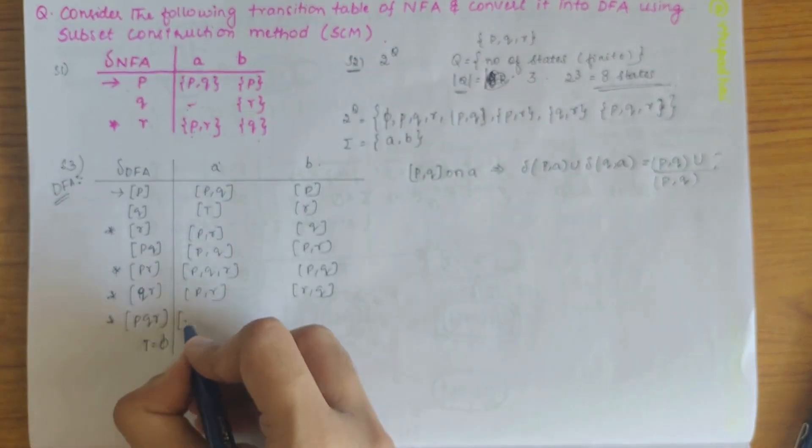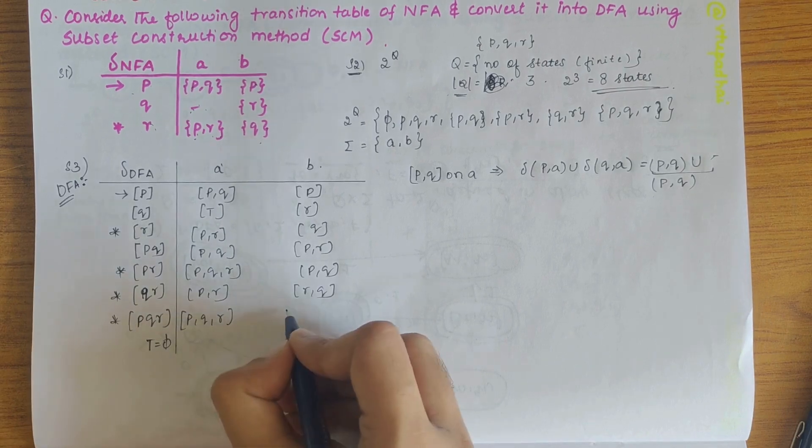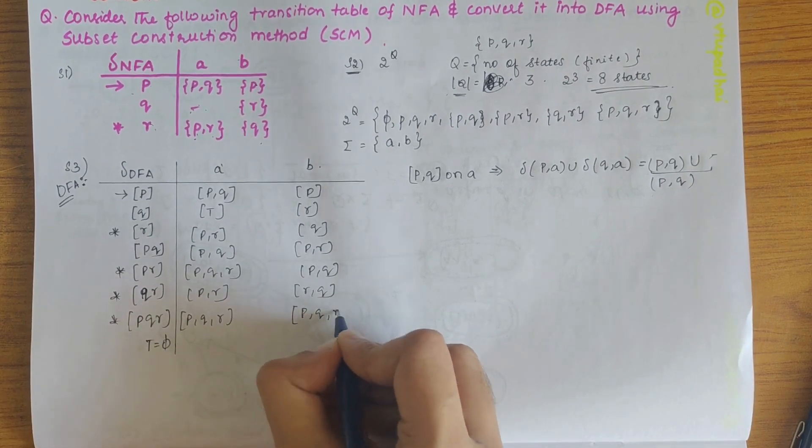Then we have pqr, pq, null and pr. So it will be pq and r, all three, here also pq and r.